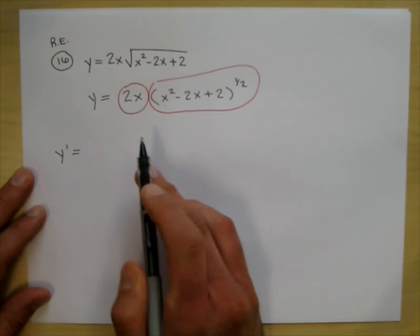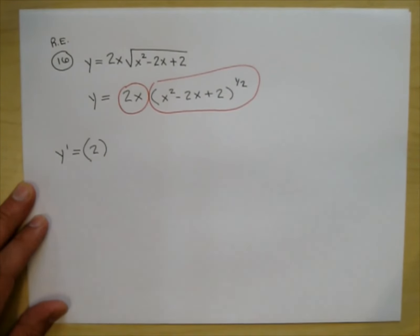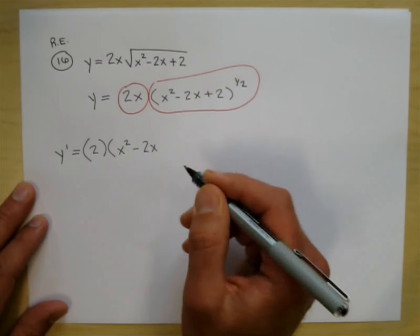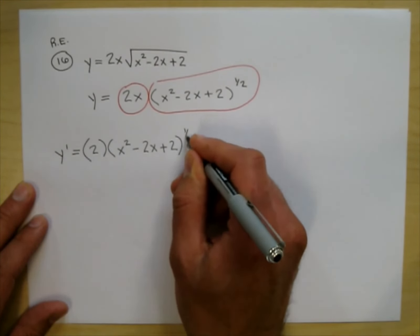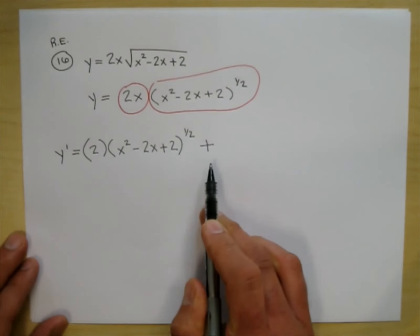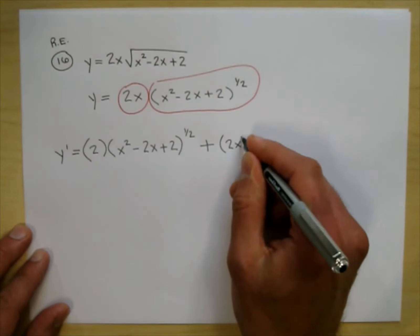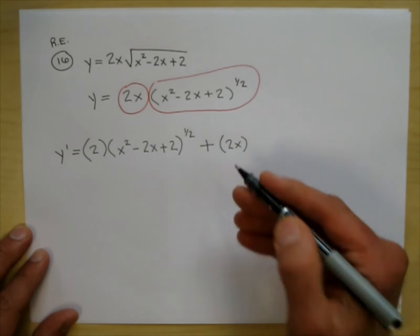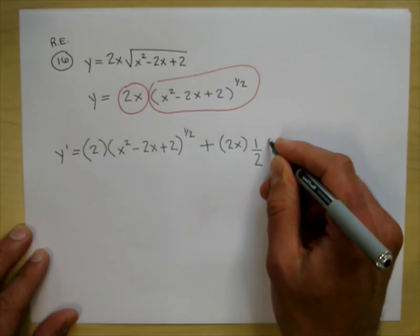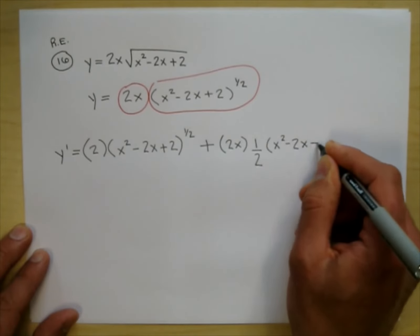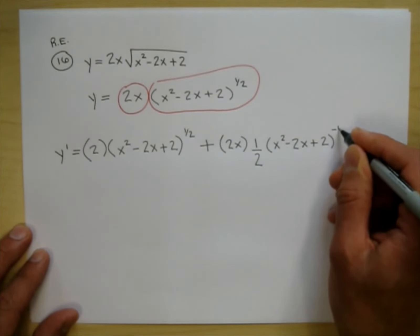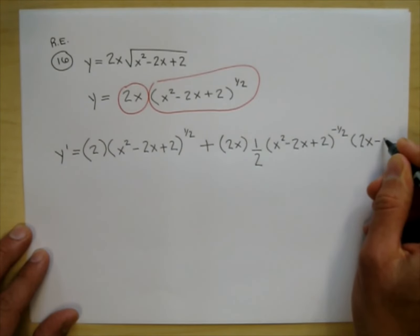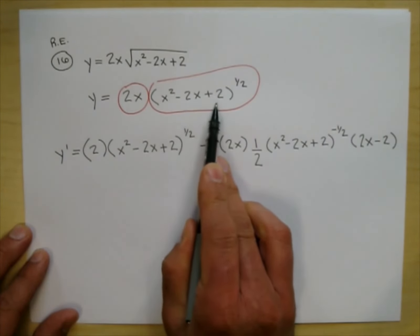y prime equals: the derivative of the first is 2, times the second (x²-2x+2) to the 1/2 power, plus — doing the product rule — the first times the derivative of the second. The derivative of the second involves the chain rule. So I have something to the 1/2; the derivative of that is 1/2 times something to the negative 1/2. Then I take the derivative of the something, which is 2x-2.